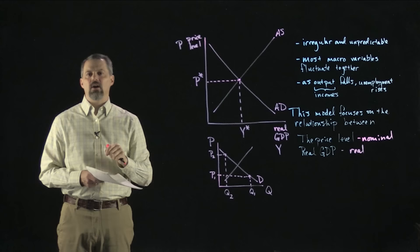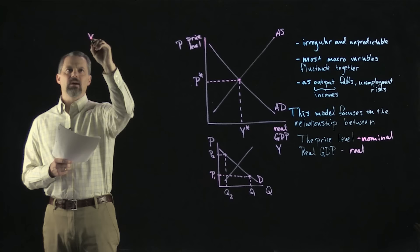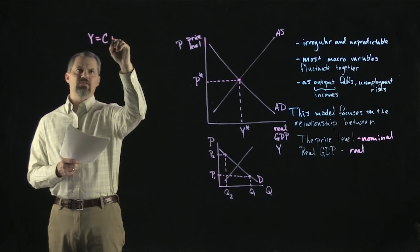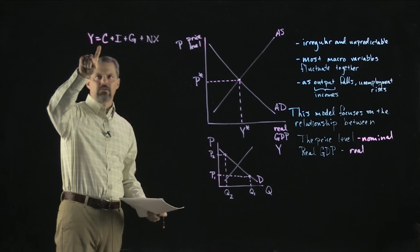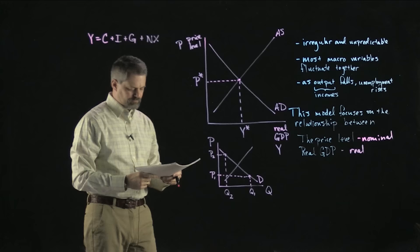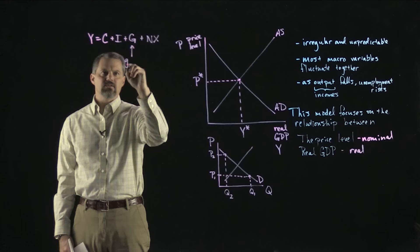The key to understanding aggregate demand is to remember Y equals C plus I plus G plus net exports — the national income identity. Any dollar in GDP is either consumption, investment, government spending, or net exports. Government spending is chosen by the government, so let's focus on how the price level affects consumption, investment, and net exports.